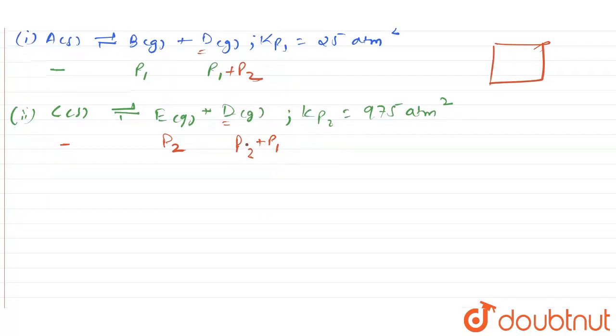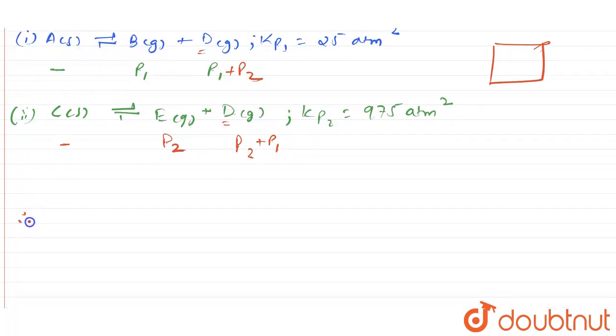Now you can write the Kp1 value. Therefore, Kp1 value will be equal to partial pressure of B multiplied by partial pressure of D, which is equal to 25 atm square.